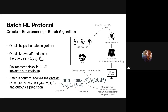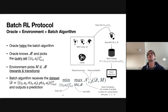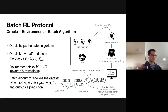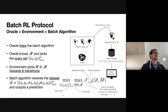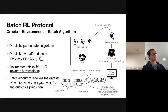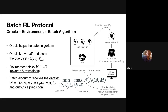A question about whether the oracle knows the feature map: yes, absolutely. The feature map is the same for all MDPs in the class — all share the same state and action space and the feature extractor is identical. So one could equivalently say the oracle chooses the feature vector where to observe reward and successive states.